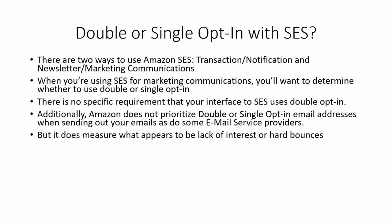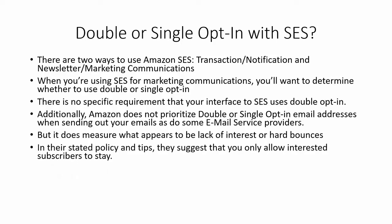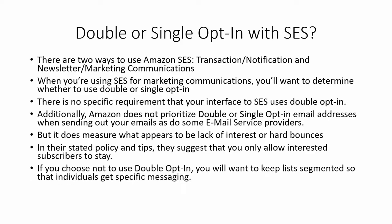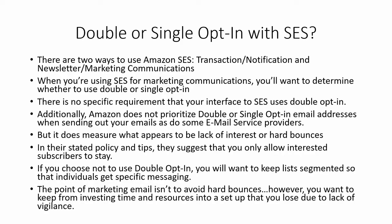Amazon does not prioritize double or single opt-in email addresses when sending your emails, as some email service providers do. However, it does measure what appears to be a lack of interest through hard bounces, and their stated tips suggest you only allow interested subscribers to stay — indicating double opt-in is preferred. If you choose not to use double opt-in, keep your list segmented so individuals get specific messaging relevant to the reason they actually opted in.